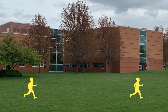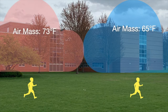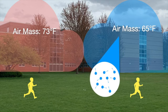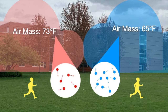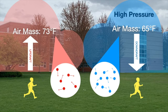Now let's look at air pressure as a function of air mass temperature and humidity. An air mass at 65 degrees Fahrenheit is relatively denser than one at 73 degrees Fahrenheit. The 73-degree air mass has particles with higher energy that are more spread out — less dense. The denser 65-degree air mass will sink in a downdraft, resulting in high pressure, while the 73-degree air mass floats up as an updraft, resulting in low pressure.